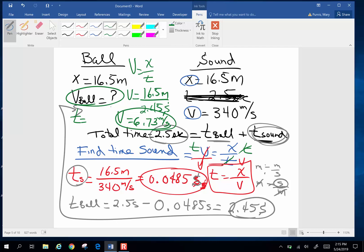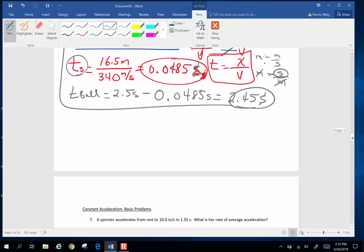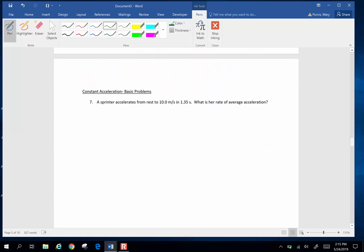Alright, that was a tricky one. And let's do one more in this video. So let's go down and let's do an acceleration problem, number 7. Here goes. A sprinter accelerates from rest to 10 meters per second in 1.35 seconds. What is their average rate of acceleration? Start out, write down what we know.